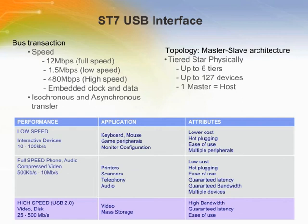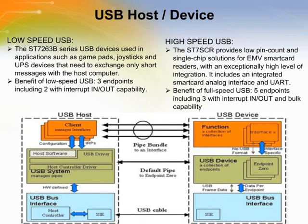USB interfaces support bus transitions using full speed, low speed, high speed, and synchronous and asynchronous modes. USB can have up to 127 devices connected to a network. The ST7263B series supports low speed USB mode, and the ST7SCR has high speed USB features.